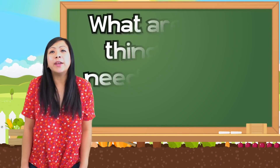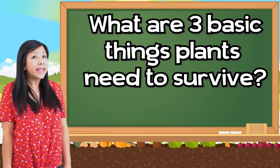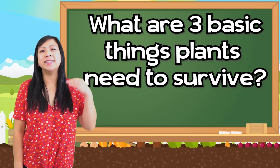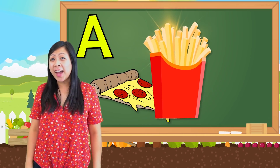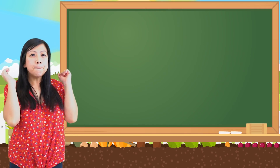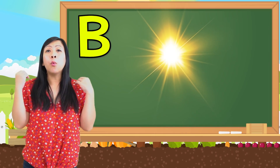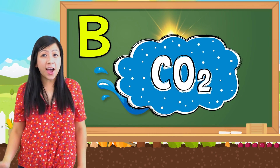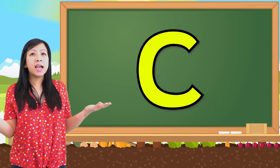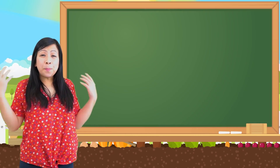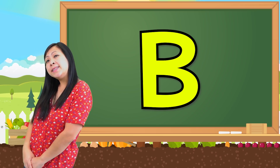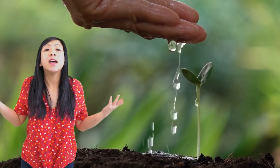Question number two: what are three basic things plants need to survive? Is it A, sunlight, pizza, and french fries? Or is it B, sunlight, water, and carbon dioxide? Or is it C, sunlight, bread, and cheese? Did you get it? The answer is B. In order to survive, plants need three basic things: sunlight, water, and carbon dioxide.